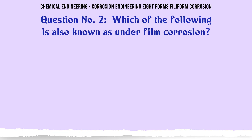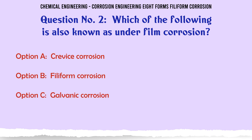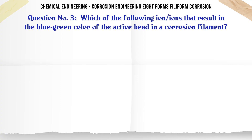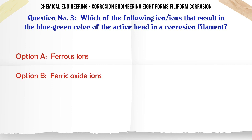Which of the following is also known as under-film corrosion? a. Crevice corrosion. b. Filiform corrosion. c. Galvanic corrosion. d. Pitting corrosion. The correct answer is b: filiform corrosion.